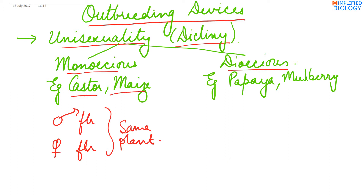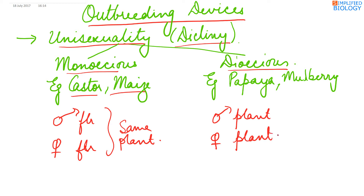Dioecious means the male and female flowers develop on separate plants — the male and female plants are different. Examples are papaya and mulberry.